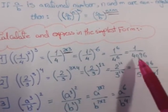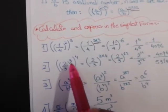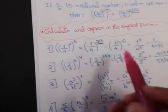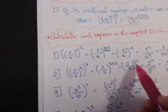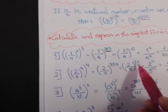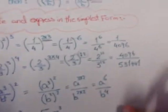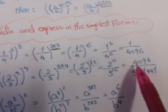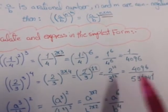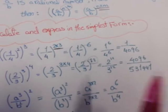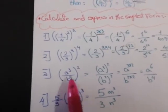Example 2: the fraction 2 over 3, power 3, all to the power 4. I will multiply 3 times 4, then distribute the new power 12 to 2 and 3. 2 power 12 gives me 4096, and 3 power 12 gives me 531441.